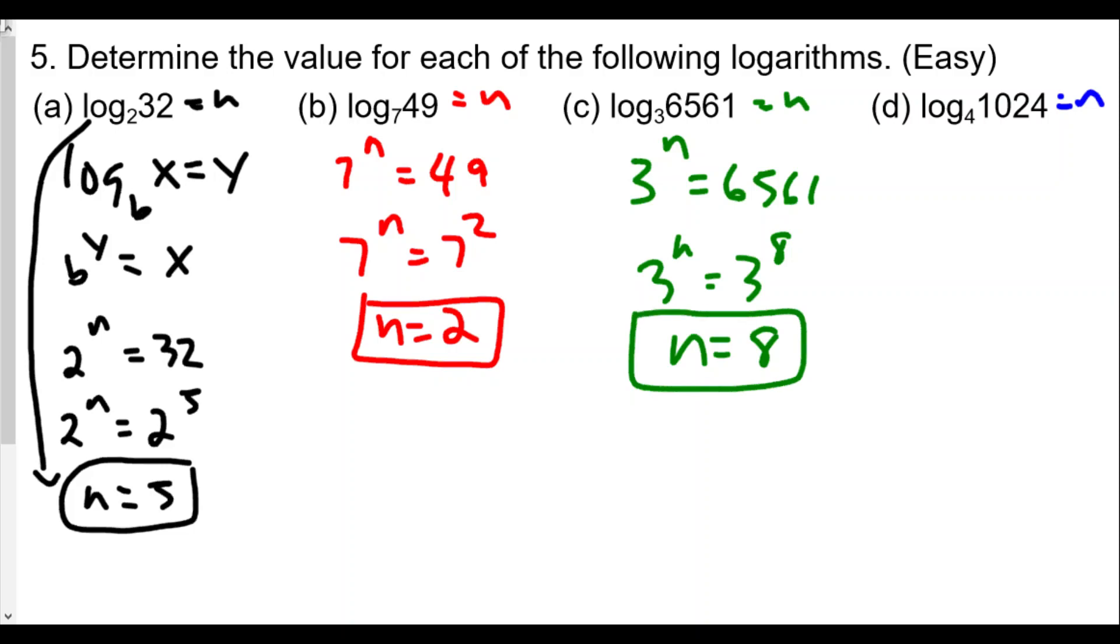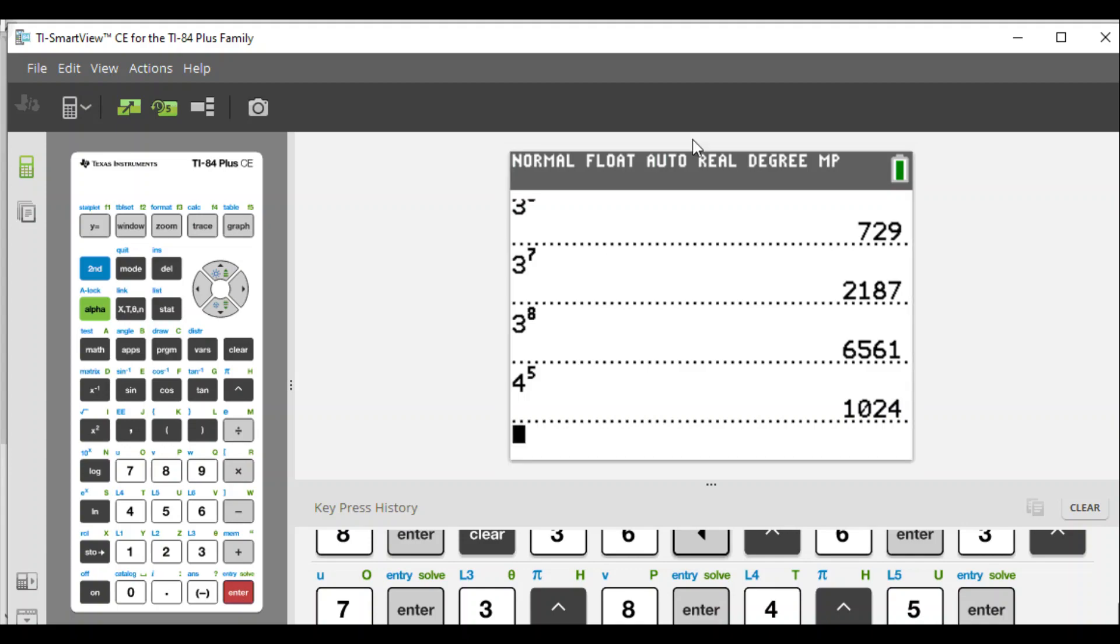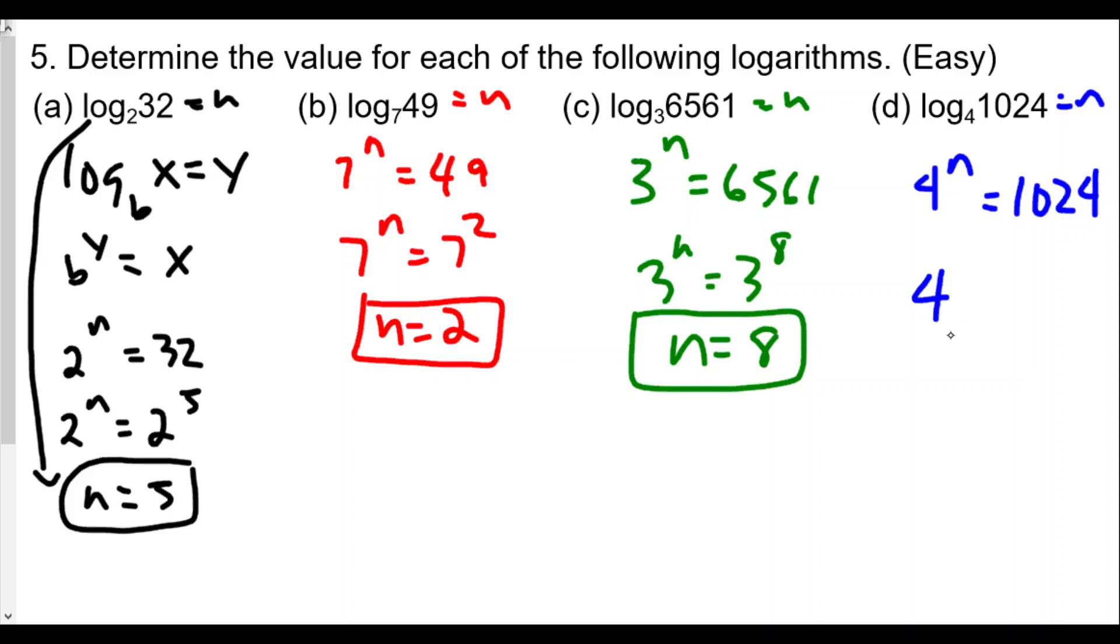And finally for this one here we have 4 to the n equals 1024. Again we'll use our calculator to find this. We're looking for 4 raised to a particular power equal to 1024. So we'll take 4 raised to the fifth power. Got it right in the first try! So we have 4 to the n equals 4 to the fifth, and n is equal to 5.